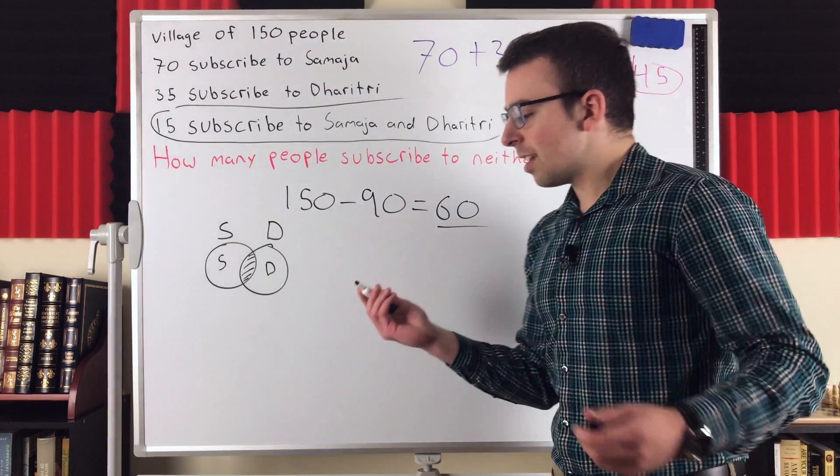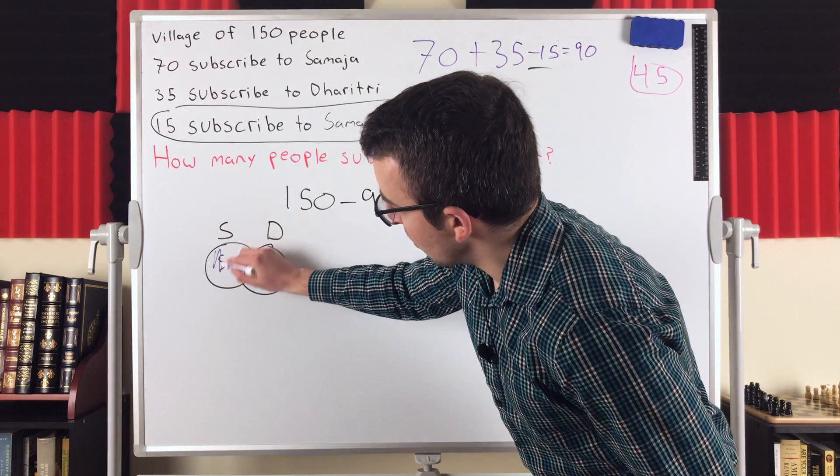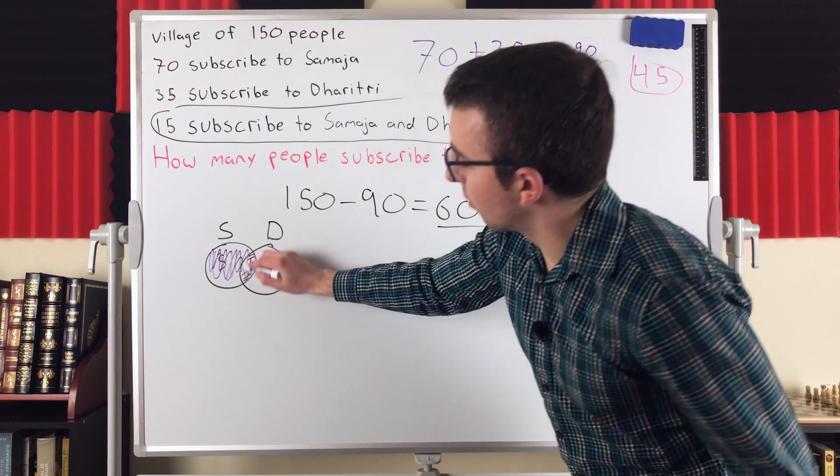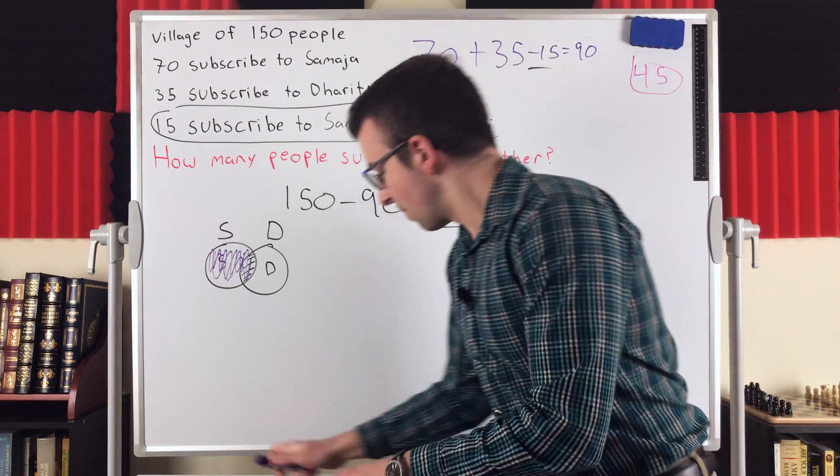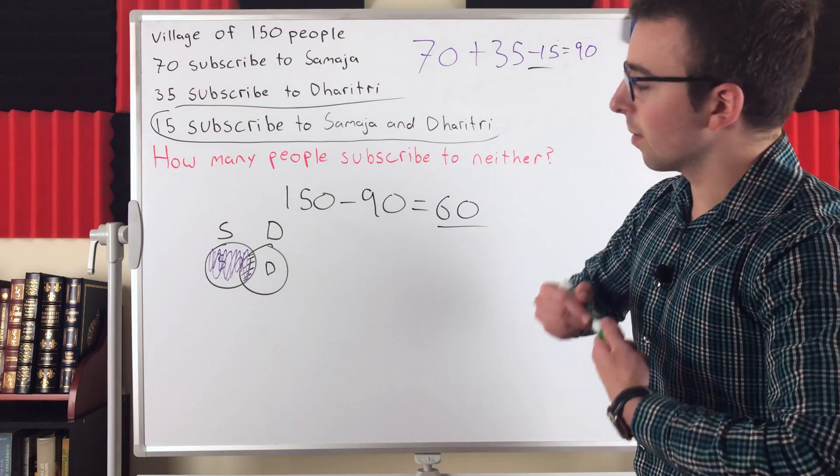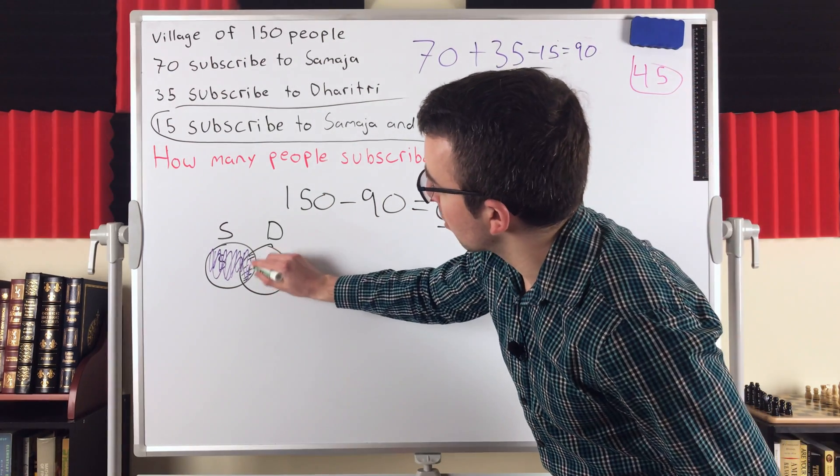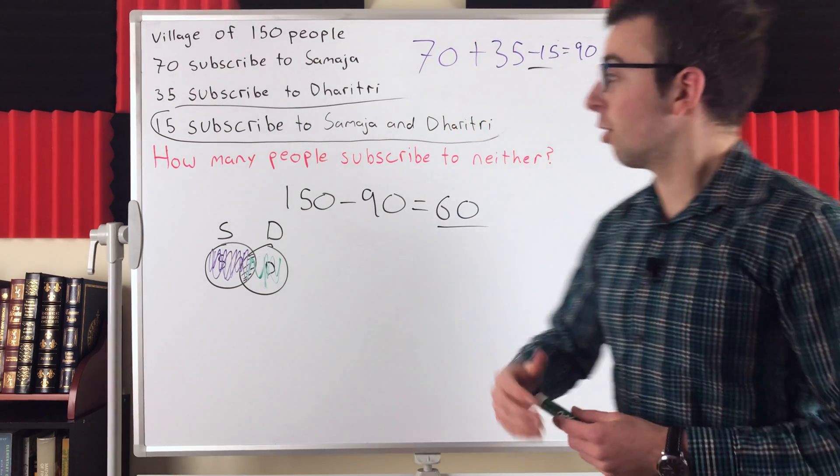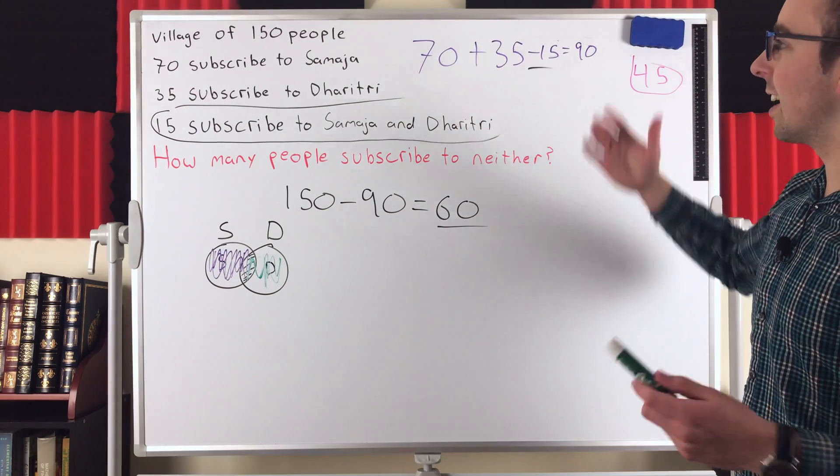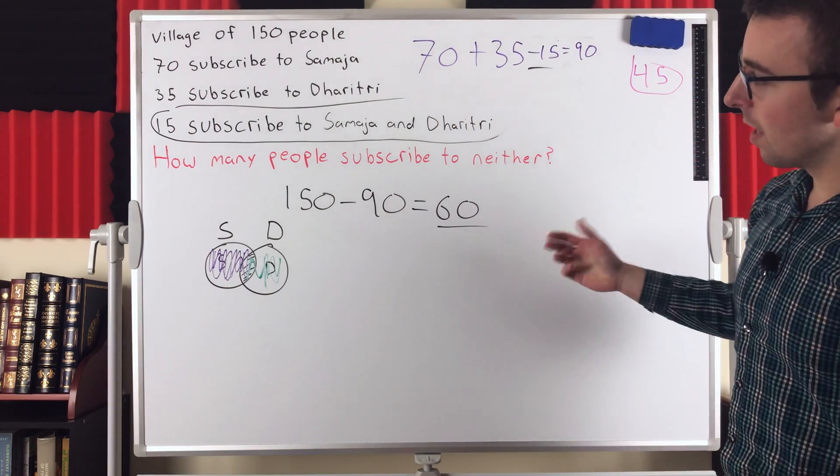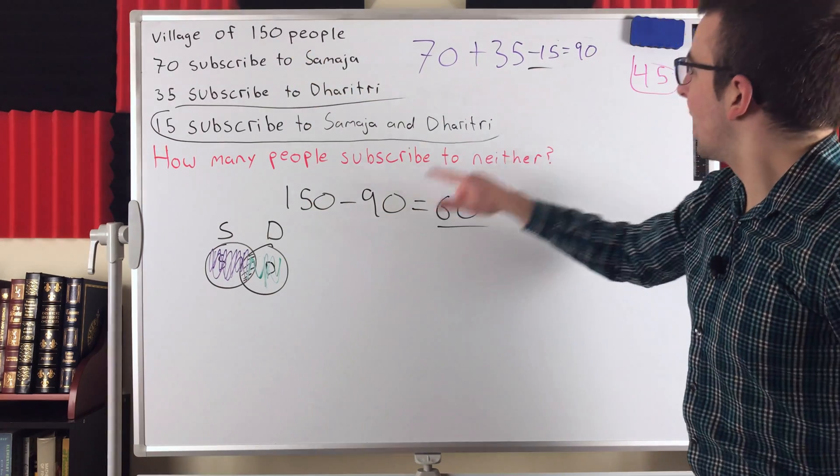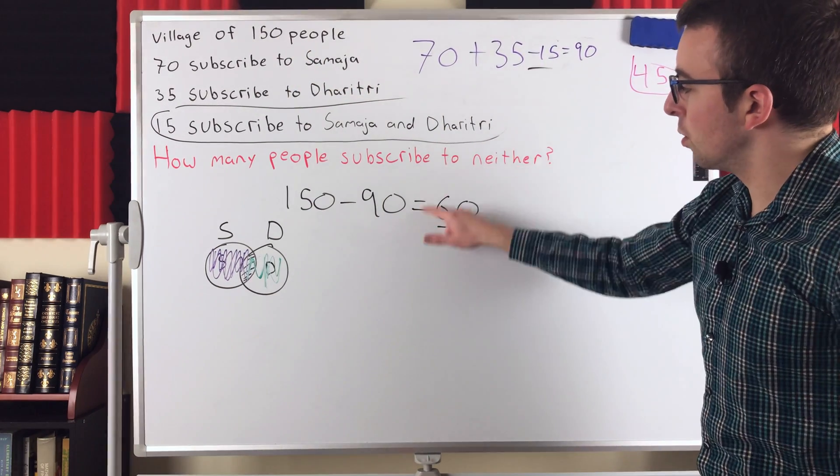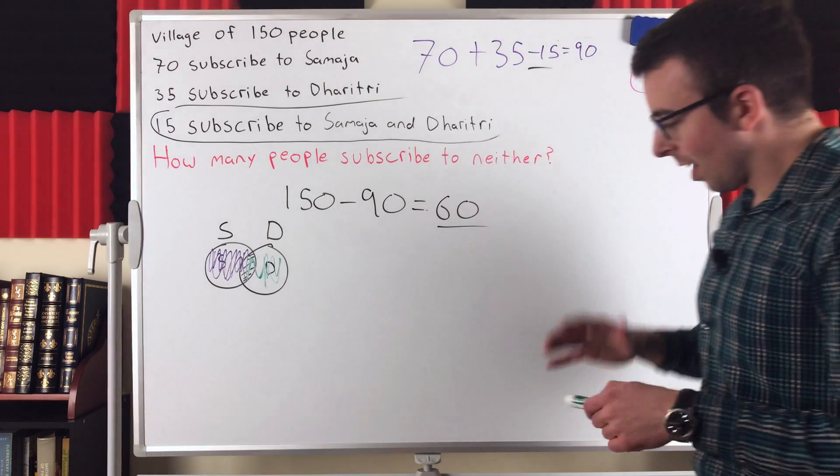You know, in this situation, we could see pretty easily, if we count the people in this set of people subscribed to the Sumaja, and then count the people in this set subscribed to Dhritri, well, we can see we're counting people in the intersection twice, and that's a problem. So we have to subtract them out once to get 90 people subscribed to a paper, thus 150 minus 90, that's the number of people who are subscribed to neither paper. And that's the answer.